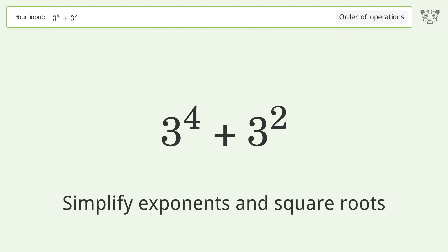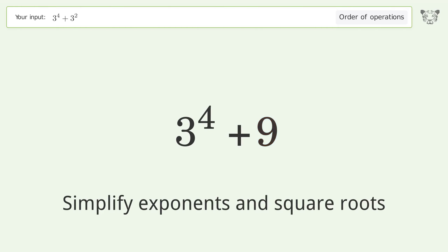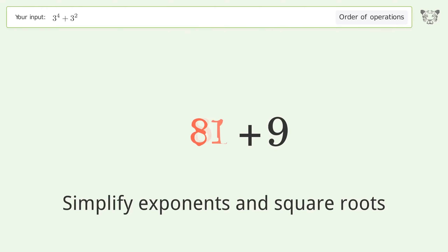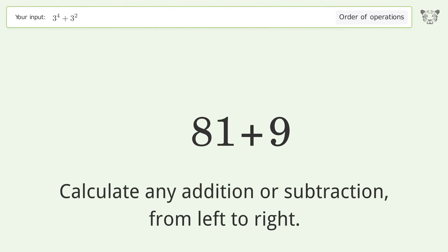First, simplify exponents and square roots: 3 to the power of 2 equals 9, and 3 to the power of 4 equals 81. Then calculate addition from left to right: 81 plus 9 equals 90.